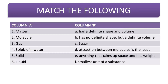Next, match the following. In column A you have: matter, molecule, gas, soluble in water, solid, and liquid. In column B you have: has a definite shape and volume; has no definite shape but a definite volume; sugar; attraction between molecules is the least; anything that takes up space and has weight; and smallest unit of substance. You have to check which one in column A matches with column B.